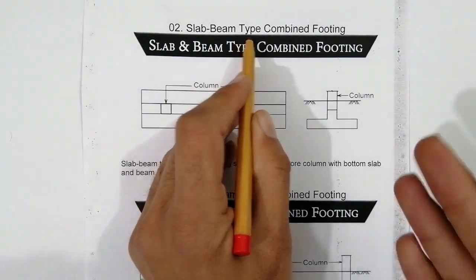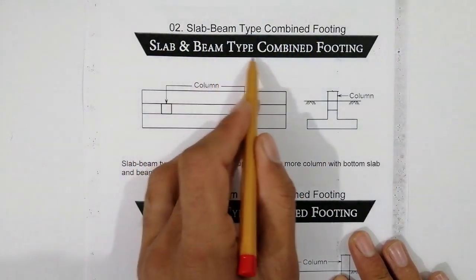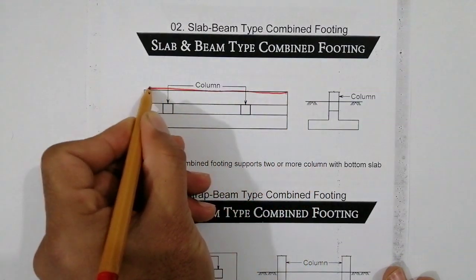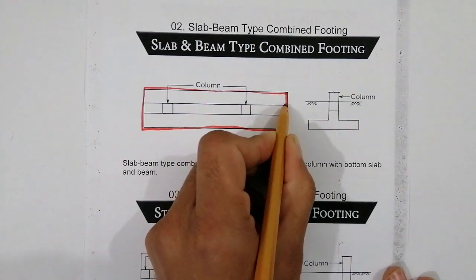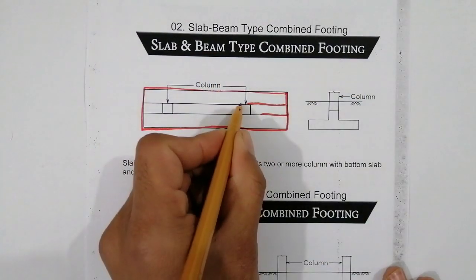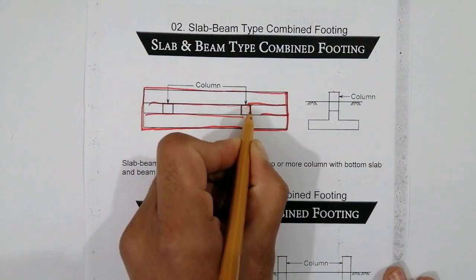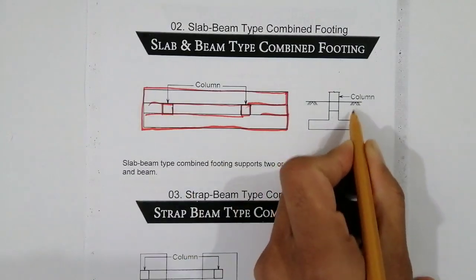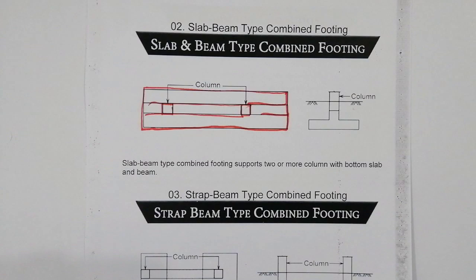The second type is the slab and beam type combined footing. Same as the slab type but with an added beam — this is the slab and this is the beam. You can see the beam connecting the columns with their footings. This is the slab-and-beam type combined footing.